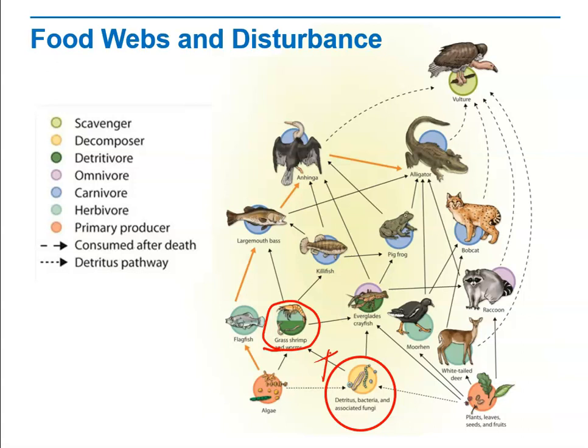And then what would happen from that? The killifish wouldn't have their food supply be as plentiful, nor the largemouth bass, nor the crayfish. One disturbance, especially a disturbance low on the food chain or food web, can have a major effect on the entire ecosystem.